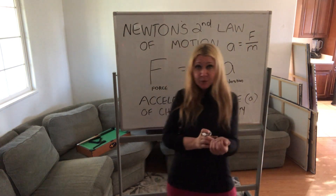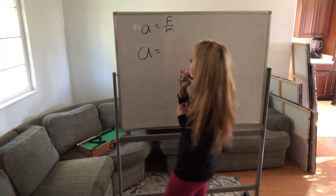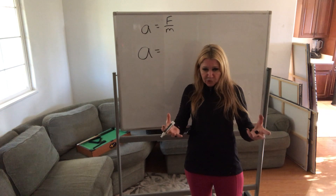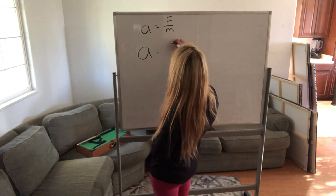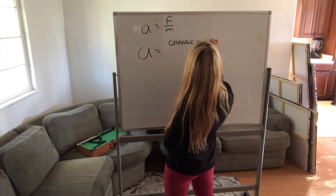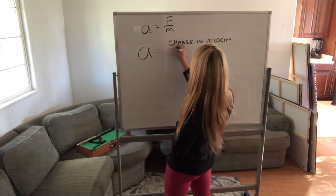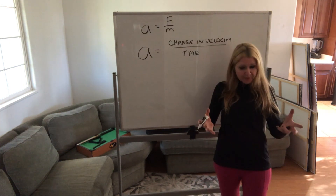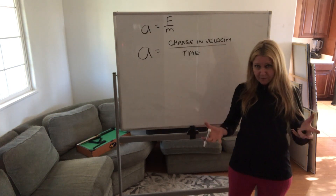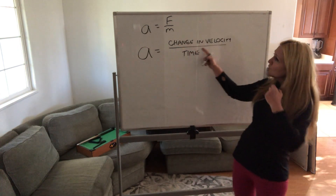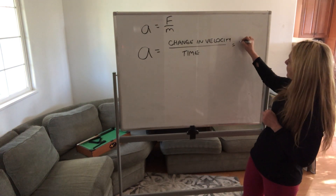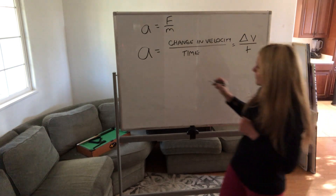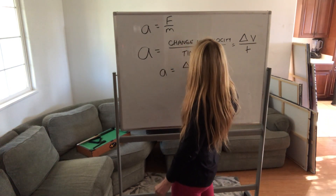We can also write acceleration as the change in velocity over time. So acceleration equals force divided by mass, but it also equals the rate of change in velocity. We indicate 'change in' with the Greek symbol delta — a triangle shape. So: acceleration equals delta velocity over t for time. A car speeding up is accelerating; a car slowing down is also accelerating — it's changing its velocity.